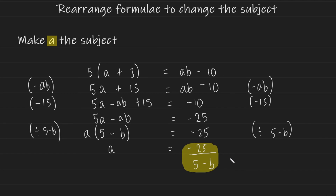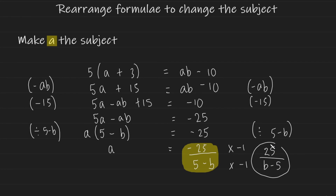If you want to rewrite this in a more elegant way, multiply the top and the bottom by negative 1. Since you're multiplying the fraction top and bottom by the same value, you don't change its value. Negative 25 times negative 1 gives 25, and 5 minus b times negative 1 gives b minus 5. So a equals 25 over (b minus 5), which can be argued is a more elegant final answer — though marks shouldn't be lost for leaving it in the previous form.